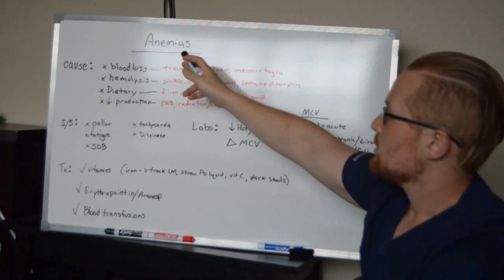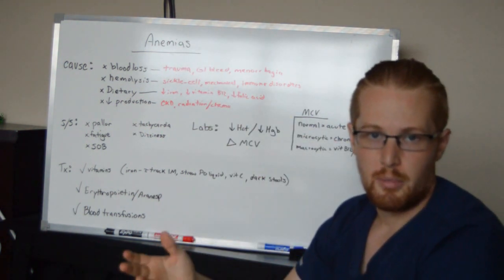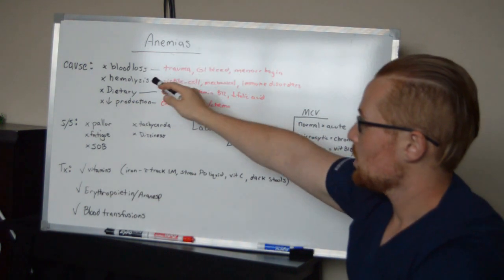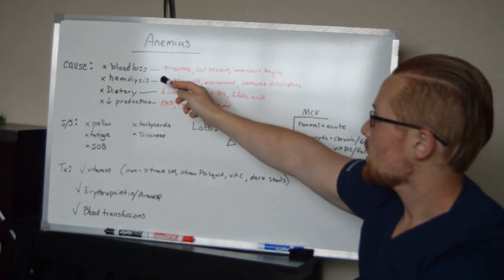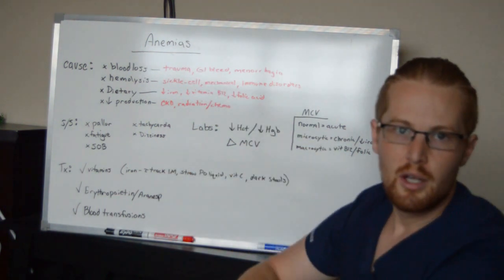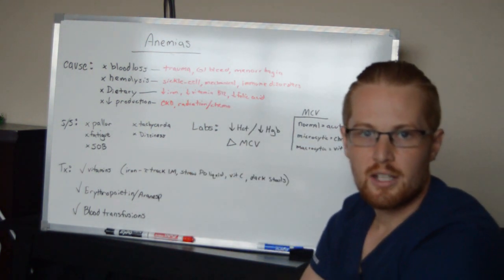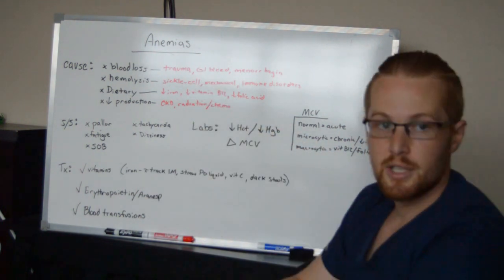Anemia is a low blood level in the patient and it's going to be caused by blood loss - just a direct loss of blood. For example, if a patient is in a trauma and they have some sort of laceration and they're losing blood, it can be through a GI bleed.